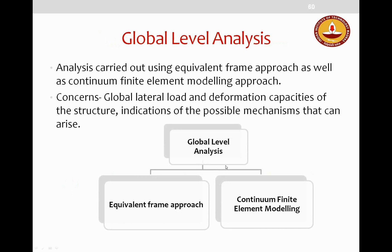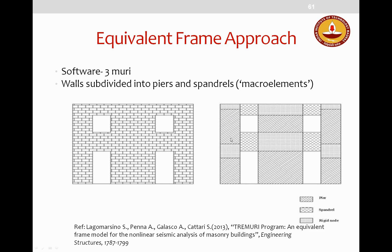An existing masonry structure is chosen because it can have variabilities in structural configurations within a building. Retrofit of existing constructions is a relevant topic. The importance of local mechanisms is not properly addressed in codes worldwide, but it can be the governing factor when adopting retrofitting strategies. Global-level analysis of the heritage structure was carried out using both equivalent frame approach and nonlinear finite element modeling, with focus on global lateral load and deformation capacities and possible mechanisms.